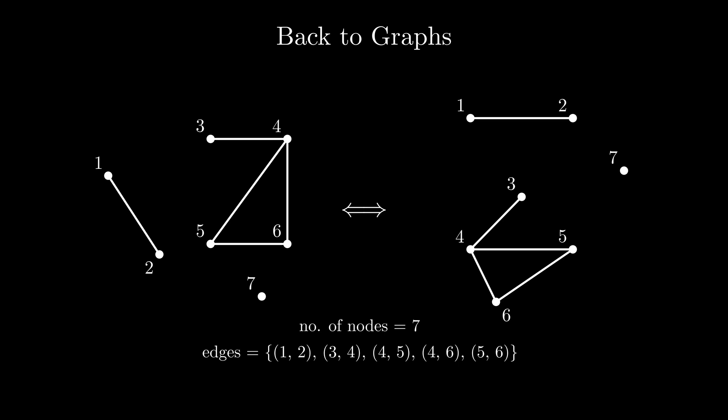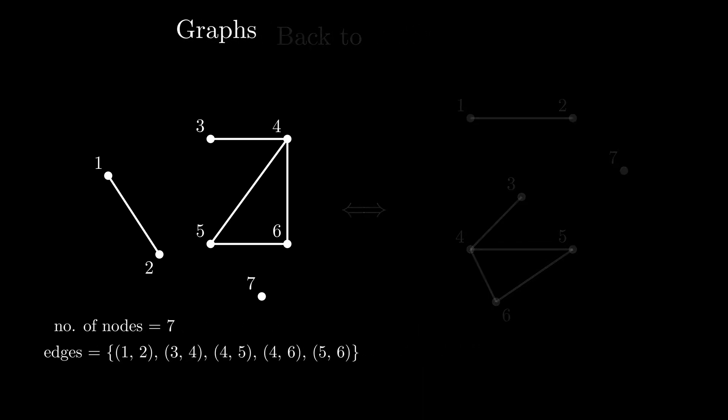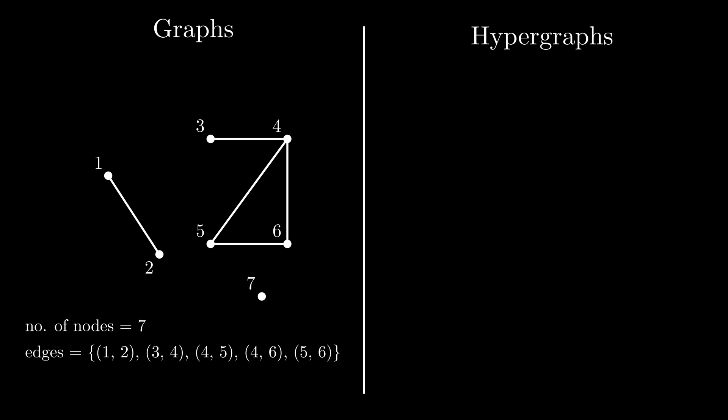Hypergraphs are more general, so to speak, graphs. While in a graph the edge connects only 2 nodes, the edges of a hypergraph are defined as subsets of nodes, so an edge can connect more than just 2 nodes. Let's say we have a hypergraph of 3 nodes and an edge connecting all 3 of them. We would have something like this.